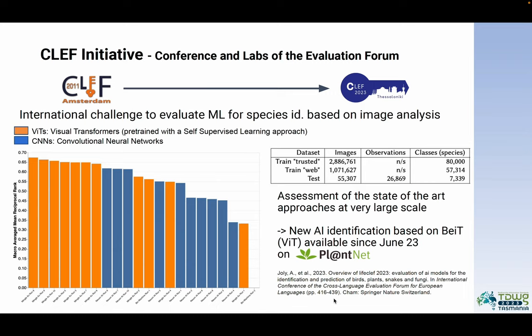This year, during a challenge dedicated to assessing state-of-the-art approaches at very large scale, we saw the major benefits of using visual transformers, which can reach the best accuracy for such tasks compared to convolutional neural networks, which were some of the most promising techniques developed in the past few years. According to that result, we decided to update the PlantNet platform based on this new architecture, and since June 2023 we use a ViT model in production in PlantNet.